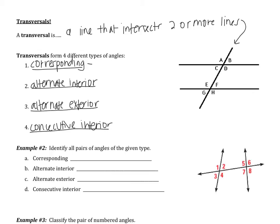Corresponding angles are in the same spot. Looking at my two lines with one transversal, I have lines A and B. If I look at angle B — B is above line A to the right of the transversal — then looking at line B, above line B and to the right of the transversal would be F. So corresponding angles would be B and F. For another example, C is below line A to the left of the transversal, so going to line B, below line B and to the left of the transversal is G. The other two pairs would be angles A and E, and then angles D and H.